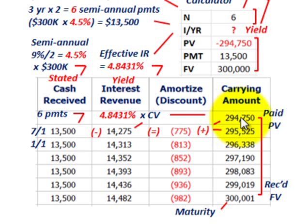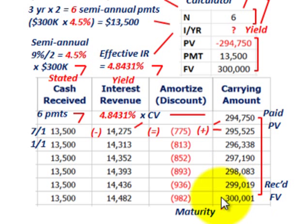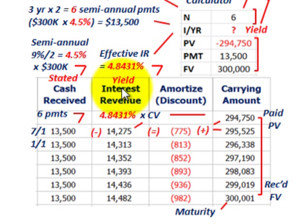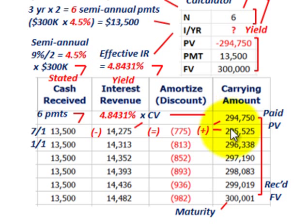The other thing we know is the carrying amount for the amortization schedule. We start with what we paid — that's our present value — and amortize it up to the maturity value, which is the future value. To determine the actual interest revenue we must recognize on this discount bond, we have to calculate the effective interest rate.